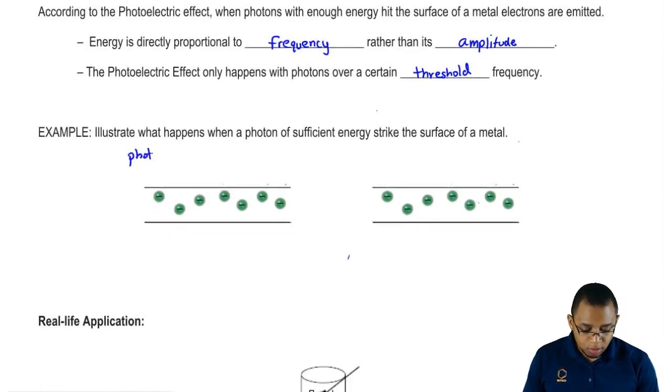Here we're going to illustrate how this happens. We have a photon here, we'll say it has not enough energy. When it strikes the surface of the metal, nothing happens. We haven't reached the threshold frequency.